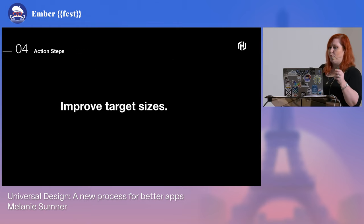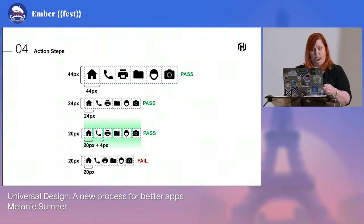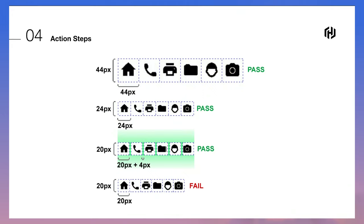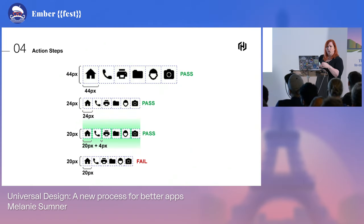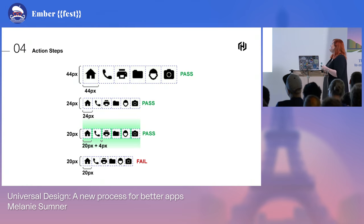Number four: improve the target sizes of your interactive elements. Ideally, 44 by 44 pixels — those of us in the fat-finger brigade will thank you. It also helps mouse users who maybe had too much coffee and are a bit jittery and click the wrong thing. But 24 by 24 pixels passes for now.